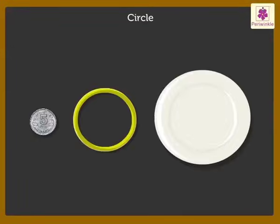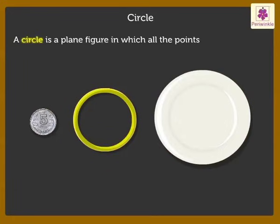Look at these objects. They are all circular in shape. A circle is a plane figure in which all the points are at the same distance from the center.